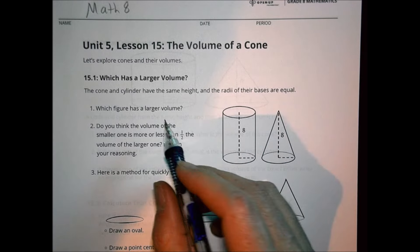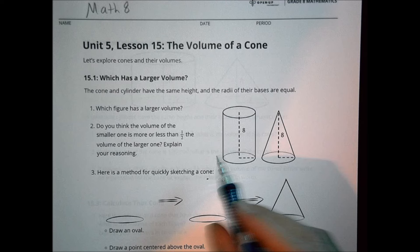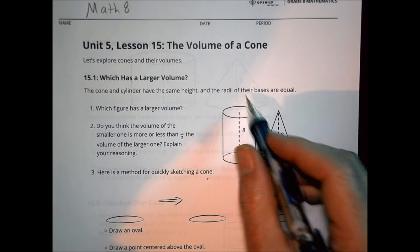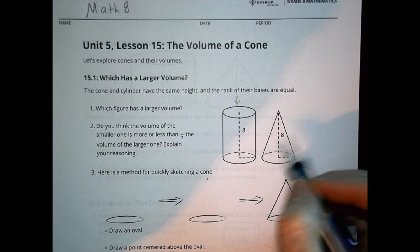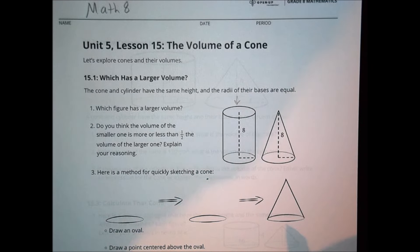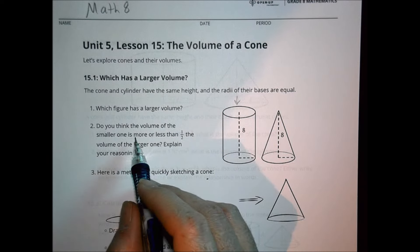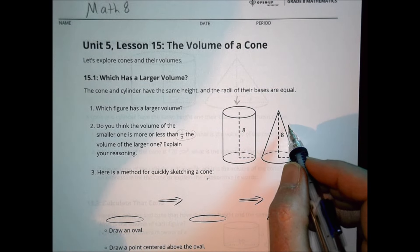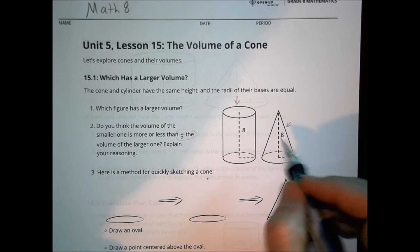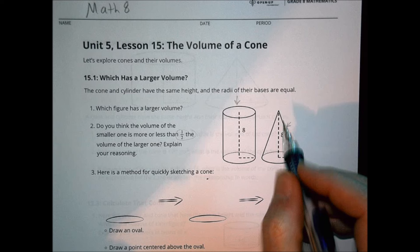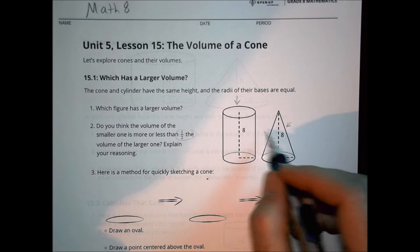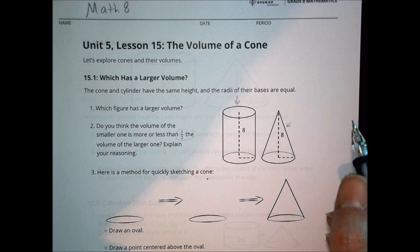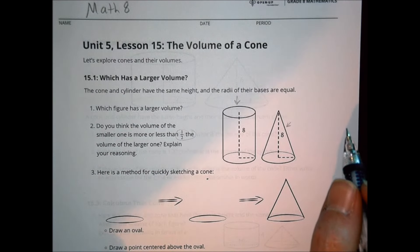First, number one asks which figure has a larger volume? Looking at those, just by looking at it, which one do you think would take up more space? Probably you would say the cylinder seems to be a little bit bigger. If you were to fill them both with water, there's more space for the water to go inside there. So the question then is, do you think the volume of the smaller one is more or less than half the volume of the larger one? Explain your reasoning. Have a little conversation with your classmates about how much less volume space this takes than that one, and why do you think it's more or less than half? We'll talk about what the actual dimensions are in a bit.